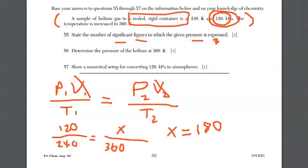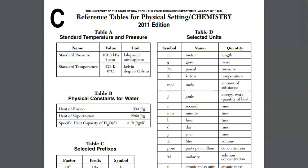Questions 55 through 57. I have my information up here. It says a sample of helium gas in a sealed rigid container. We're given a temperature of 240 K and a pressure of 120 kilopascals. And we have an increase in temperature to 360 K. Question 55, state the number of significant figures to which the given pressure is expressed. Now you have to realize that kilopascal is a unit of pressure. We have 120 with a decimal point. That decimal point is important because I have a number greater than one in the decimal. We count all three of these numbers in the 120 as significant. So the answer here is three significant figures.